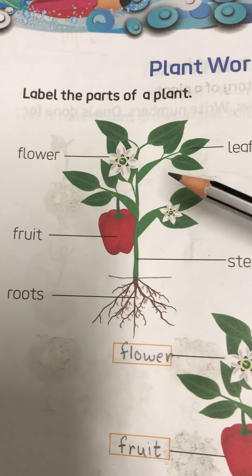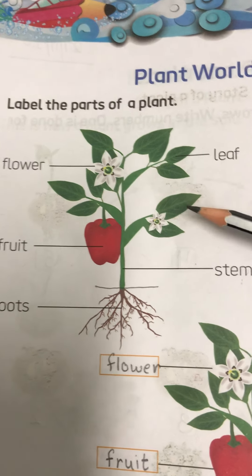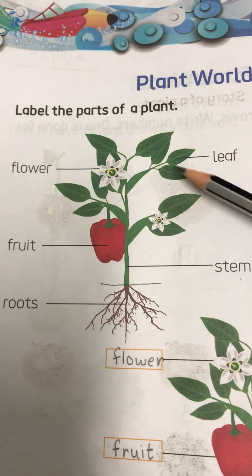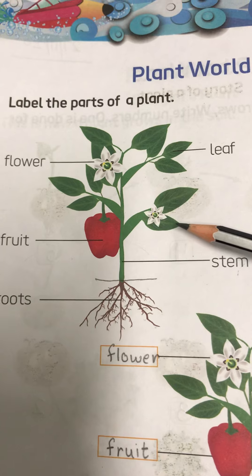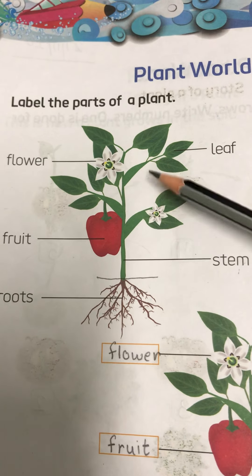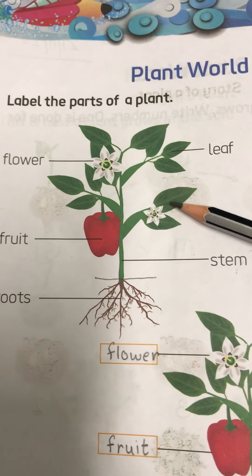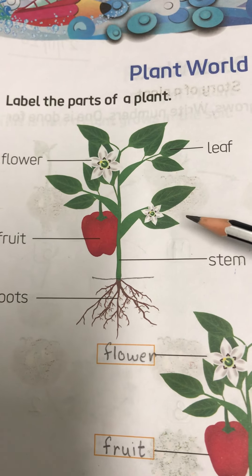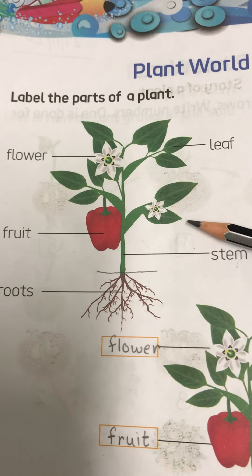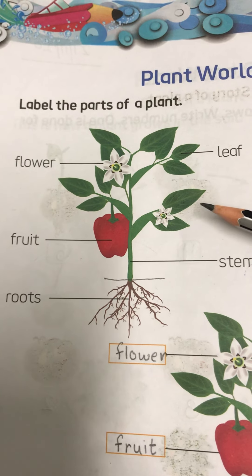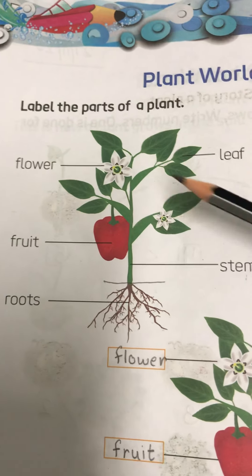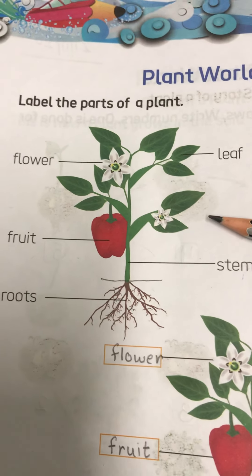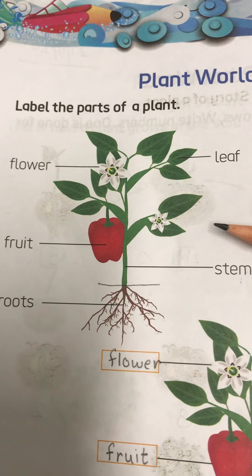Now, the next part is leaves. Leaves grow on stems and branches. They prepare food for the plant. The main job of leaves is to prepare food for the plant. Who makes the food for the plant? Leaves.